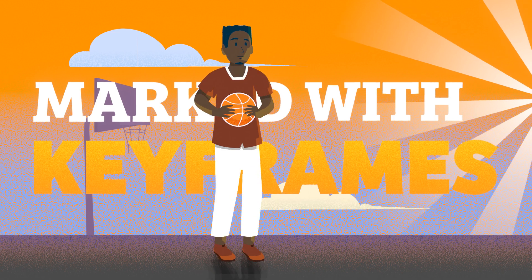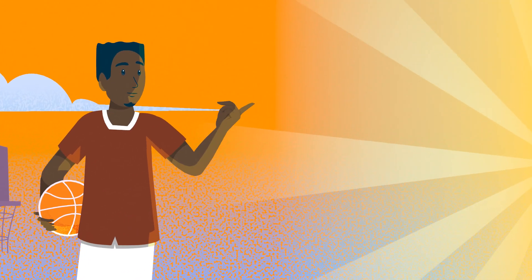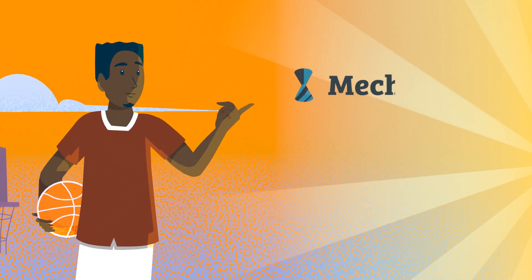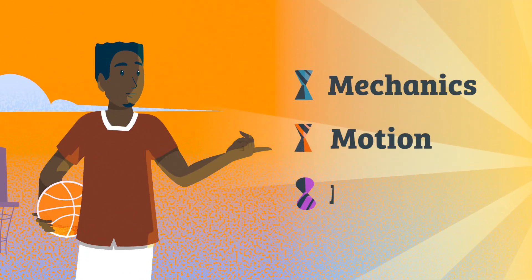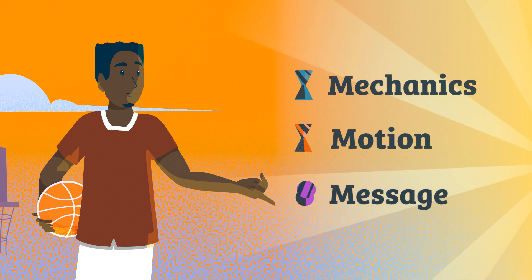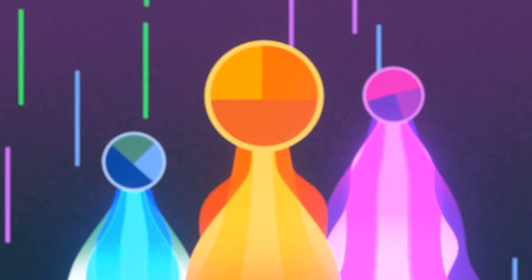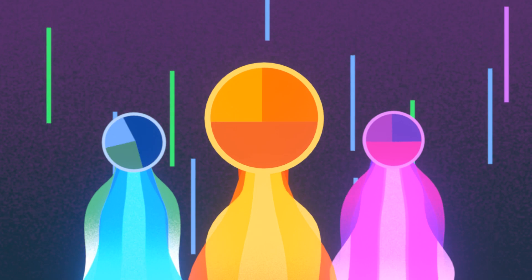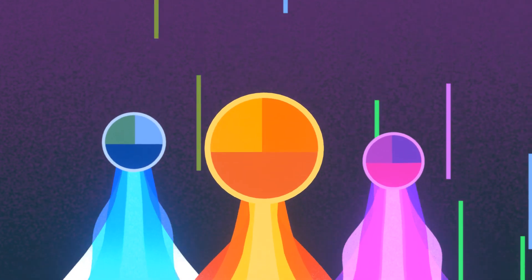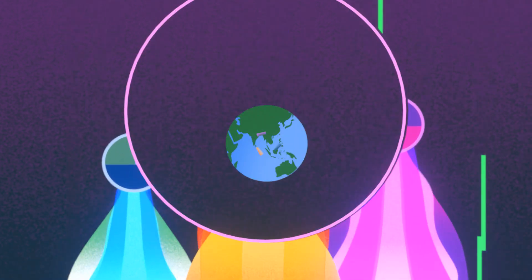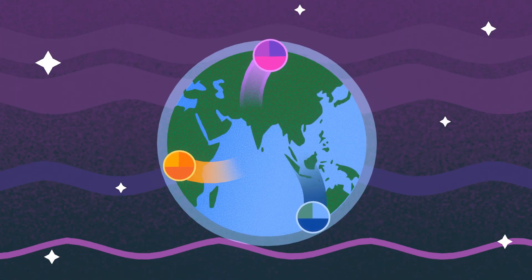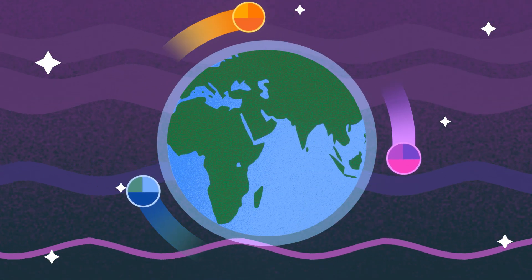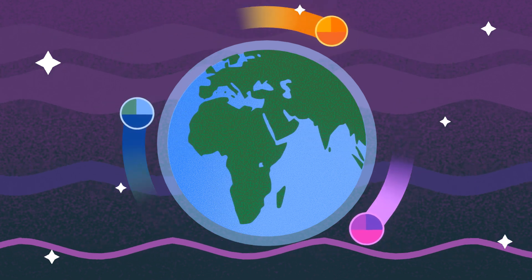I like to separate my markers into three ends: one, mechanics; two, motion; three, message. These markers are like points in a circle. It's not so important where you start — it's more important that you complete the loop, and to complete the loop, you must pass through all points.